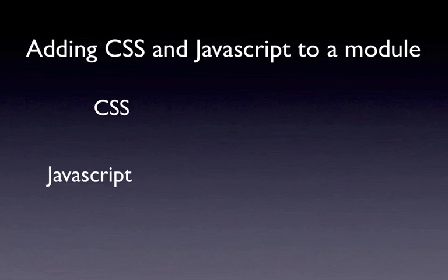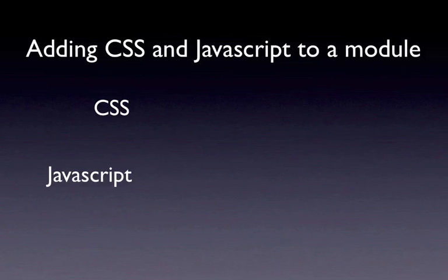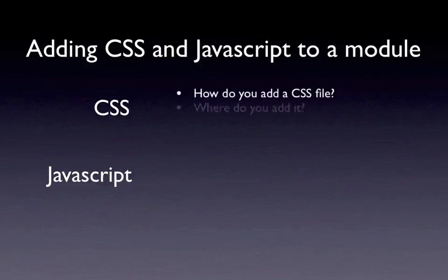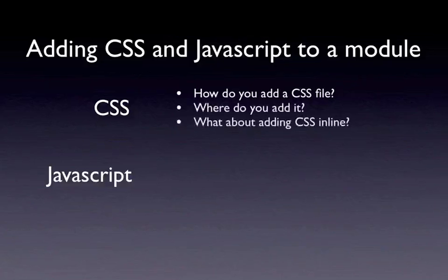Hi, this is Chris Shattuck with buildamodule.com, and I'm going to tell you a little bit about how to add CSS and JavaScript to your module. Once you've started building your module and you have a grasp of hooks, probably one of the first things you're going to do is need to add a CSS file or a JavaScript file in order to add functionality and look and feel to your module. In this short video, I'm going to cover how to add a CSS file, where to add it in the module, and what about adding it inline as opposed to in an external file.